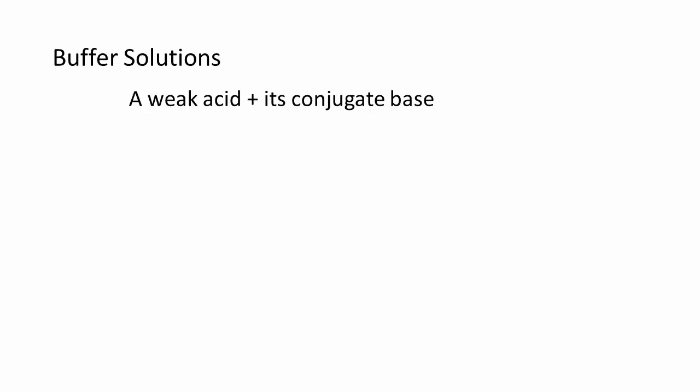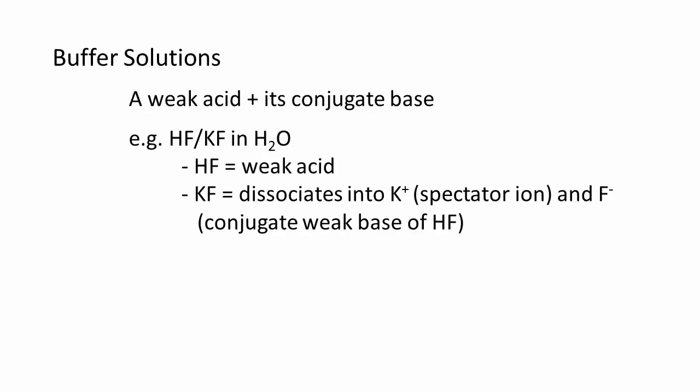By significant amounts, we mean more than the amount expected from the partial ionization of either the weak acid or the weak base. We can achieve this by directly adding both the weak acid and a salt of the conjugate base to water. We can also achieve this by partially titrating a solution of the weak acid or partially titrating a solution of the conjugate base.